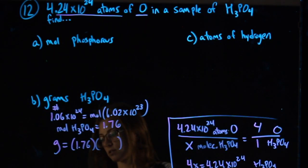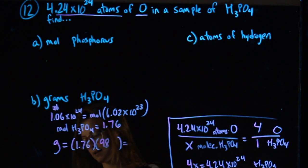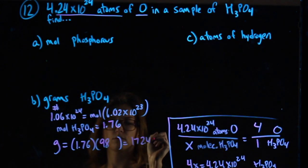Three H's, a P that's 31, and four O's, they're each 16. My molecular weight is 98. Therefore, my grams are 172.48.